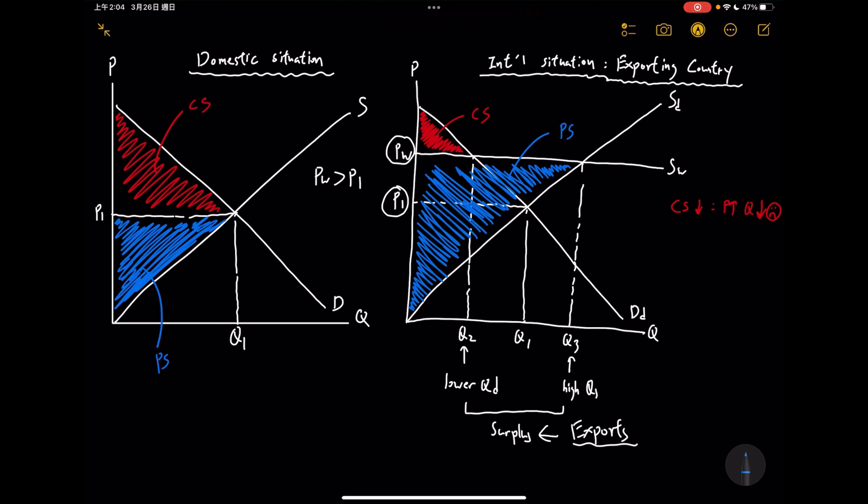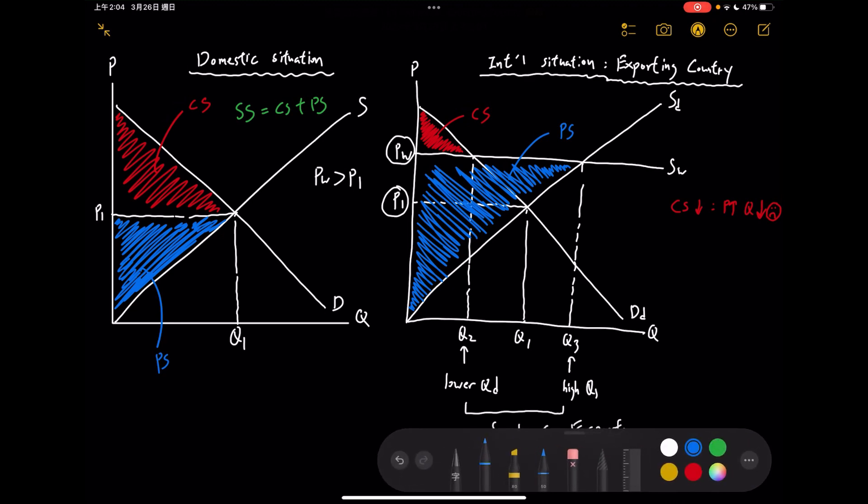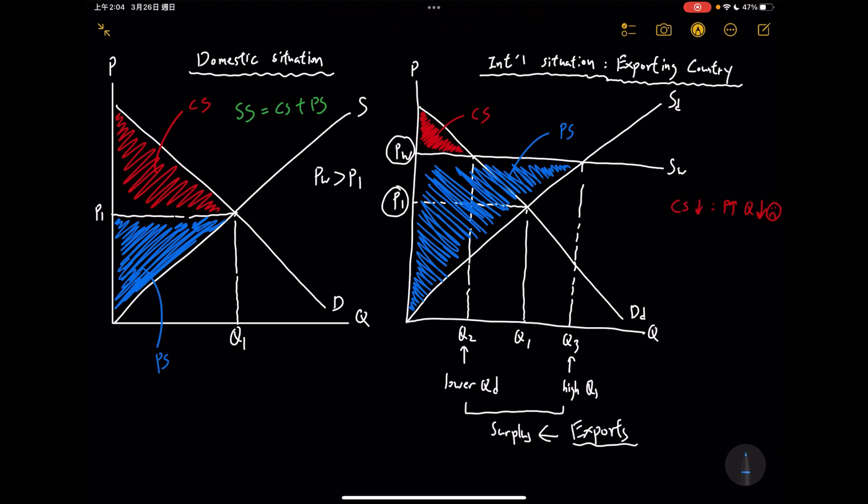We all know that in order to find the social surplus, we need to combine the CS and PS together. Let me use green color. Social surplus, which is SS, is equal to CS plus PS. If you compare the two situations here, obviously SS in an international situation like this will be bigger than the domestic situation.